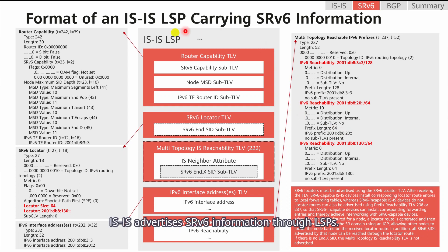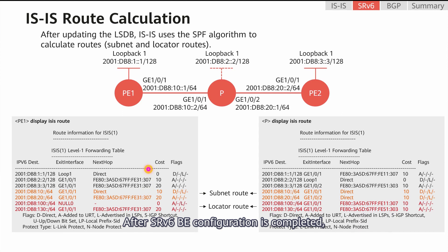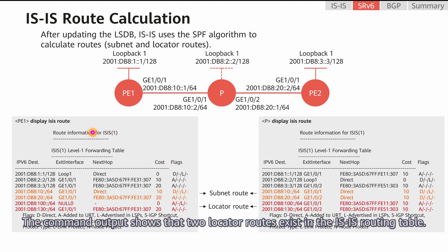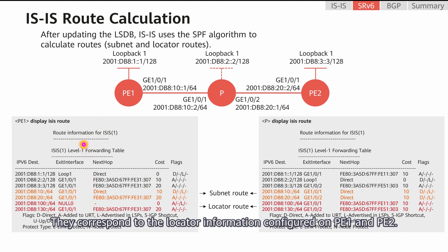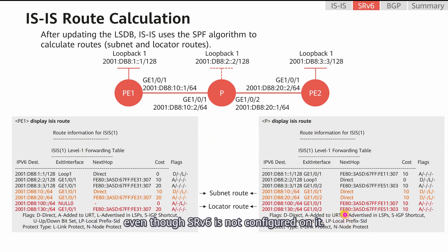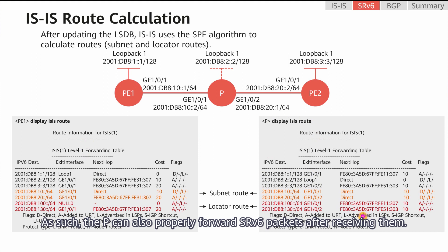After SRv6BE is configured, it advertises SRv6 information through LSPs. We can see that the SRv6 locator TLV carries locator information. After SRv6BE configuration is completed, IS-IS updates the LSDB and then uses the SPF algorithm to calculate routes. Check the IS-IS routing table on PE1. The command output shows that two locator routes exist, corresponding to the locator information configured on PE1 and PE2. The P has also learned these two locator routes even though SRv6 is not configured on it, allowing it to properly forward SRv6 packets.